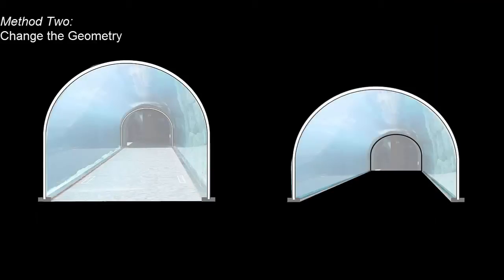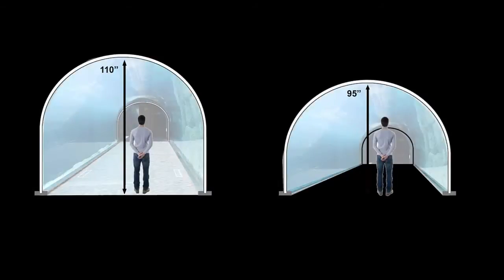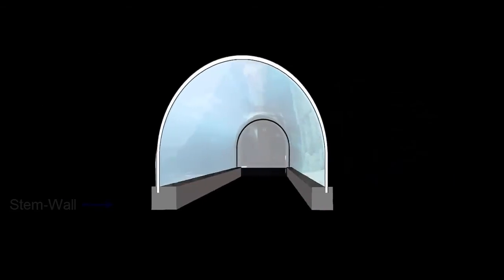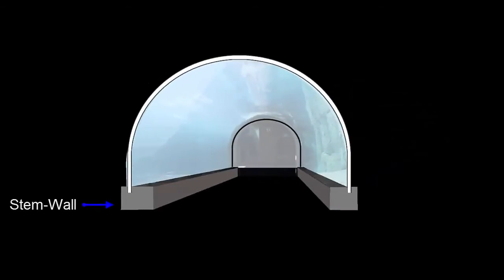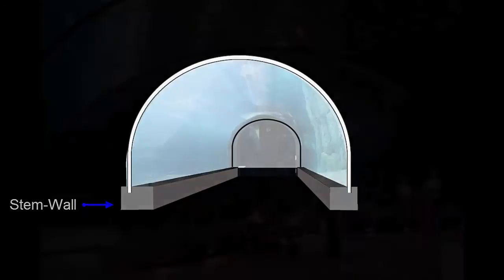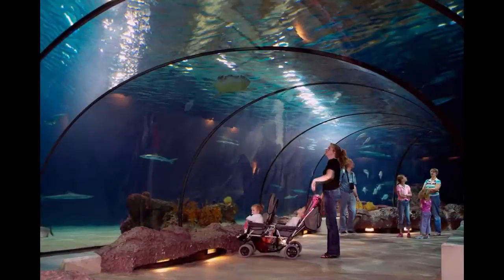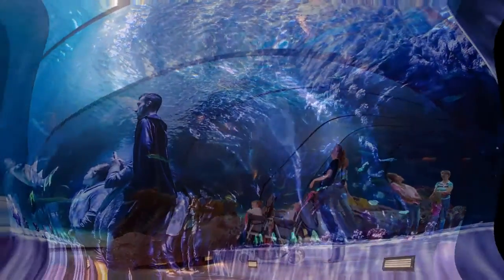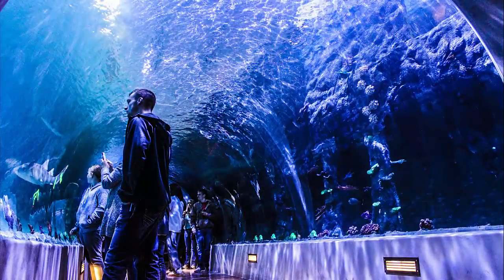Changing the shape of the structure can also serve to reduce the amount of acrylic needed to construct it. In the example, a 15-inch reduction of rise does little to downgrade the appearance of the tunnel, but goes far in savings. Stem walls are also an affordable method by which to reduce the amount of acrylic used without subtracting from the experience of guests. A stem wall on one or both sides might also serve as a seating area or a place to display informational signage.